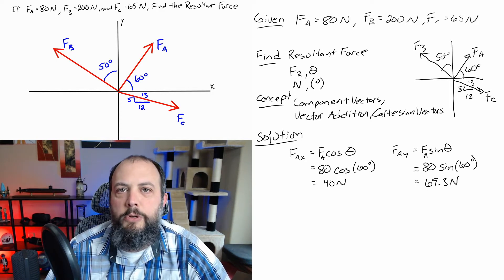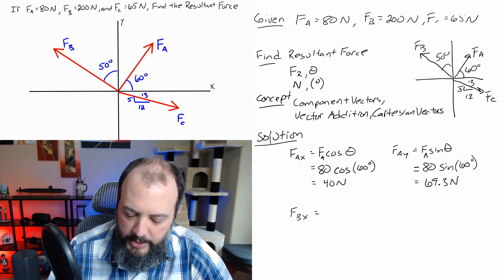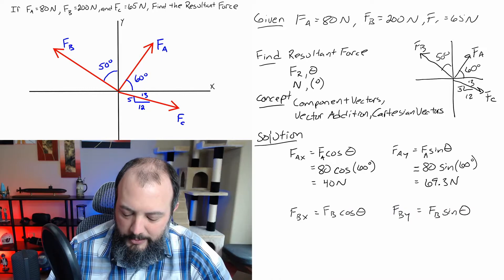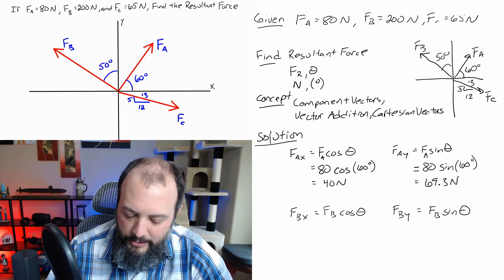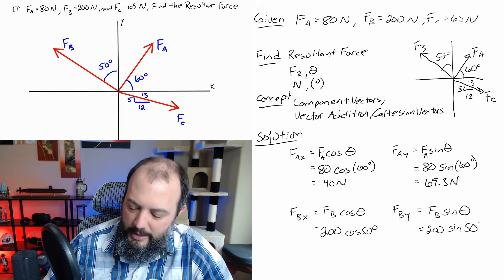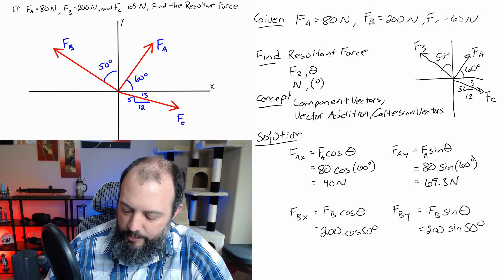Let's move on to force B. Force B in the x direction — I'm going to start off and show the common mistakes. This is going to be mistake number one. So x direction: cosine theta; y direction: sine theta — 200 cosine 50 degrees, 200 sine 50 degrees. I'll put a big red X there — this was the first mistake.